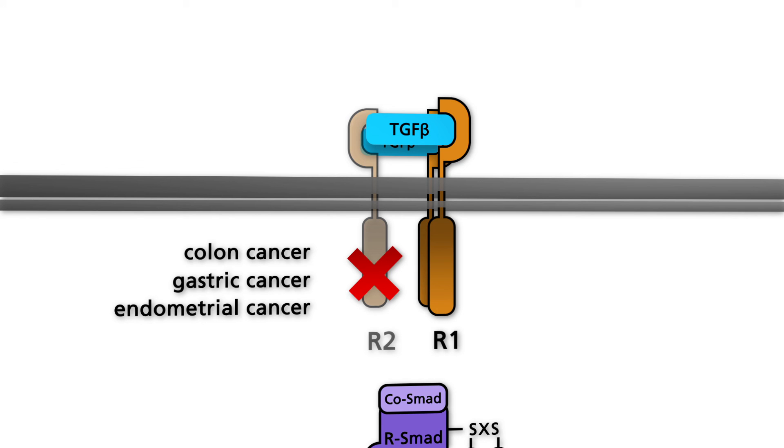Defects in the DNA mismatch repair system are associated with these types of mutation in hereditary nonpolyposis colorectal cancer in particular.